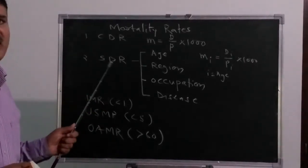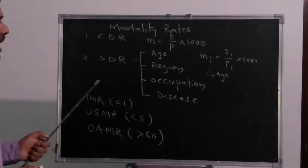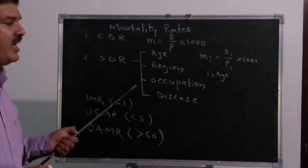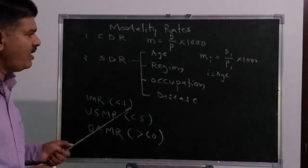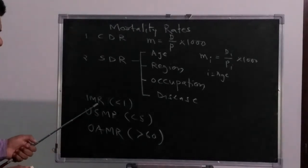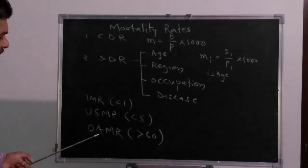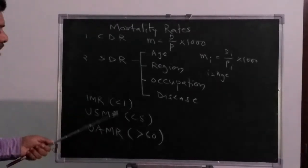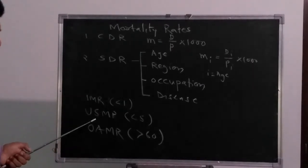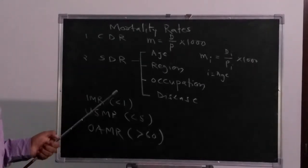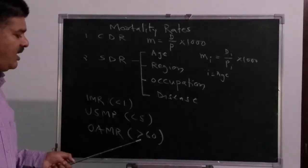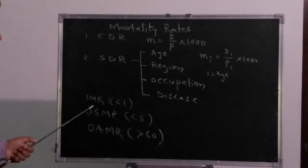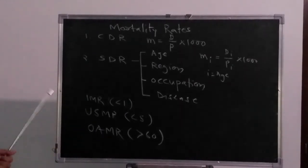Age-specific death rate is important because we can understand what deaths have taken place in a particular age group. Infant mortality rate and old age mortality rates are higher than the in-between age groups. The death rate for ages 15 to 60 is less when compared with infant and old age mortality rates.